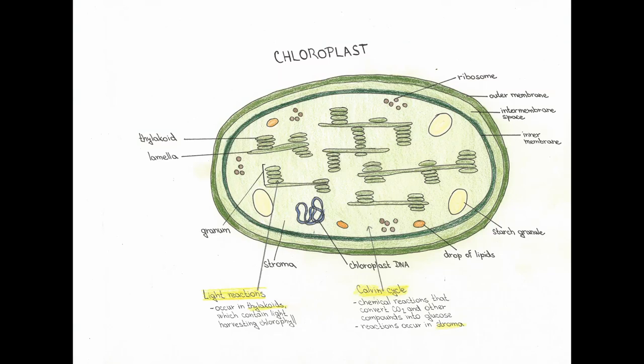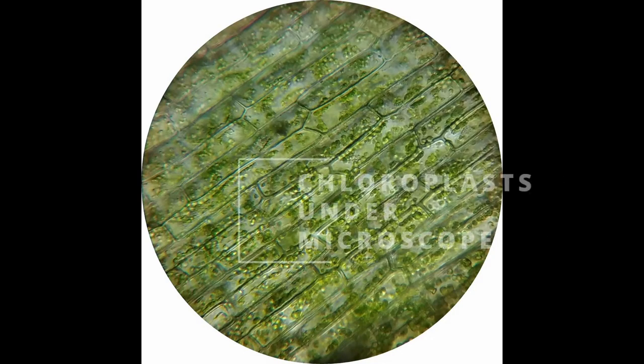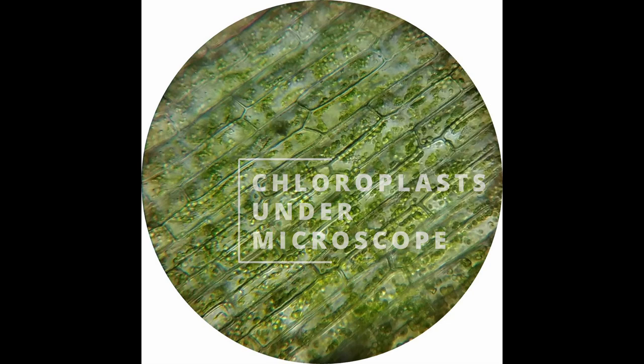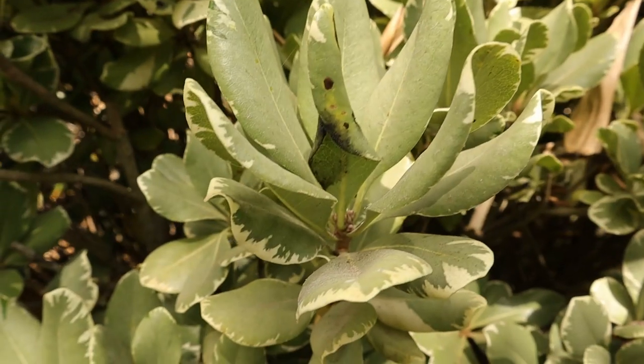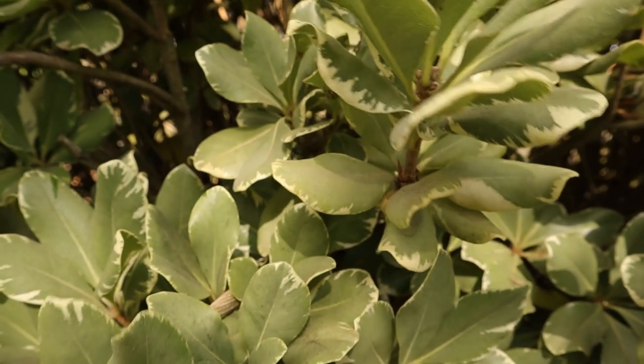The light is captured by organelles — structures inside cells — called chloroplasts. Chloroplasts are most abundant in leaves, although they occur in smaller concentrations in other plant parts as well. This is where photosynthesis happens.